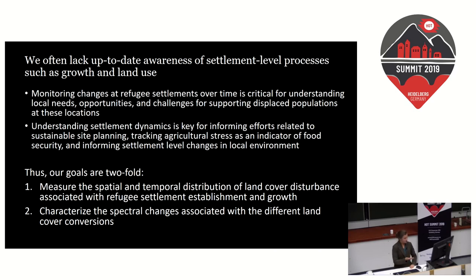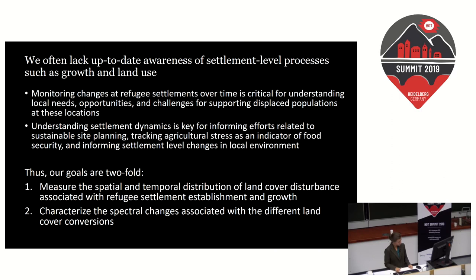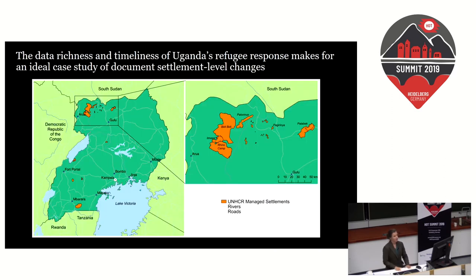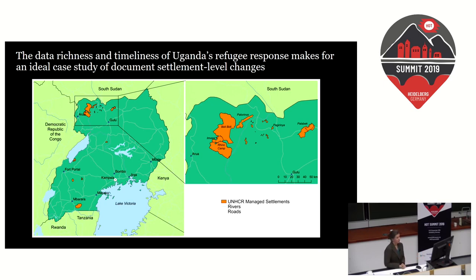Part of the Missing Millions project looks at how we can use satellite time series analysis to measure the spatial and temporal distribution of land cover disturbances associated with the establishment and growth of refugee settlements, and to characterize spectral changes associated with different land cover changes. The project has gravitated toward Uganda because of the abundant data available, largely due to the amazing work that HOT Uganda does and the international attention Uganda has received for its refugee response efforts.